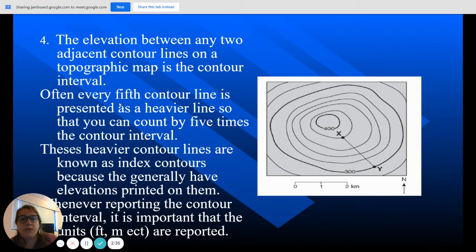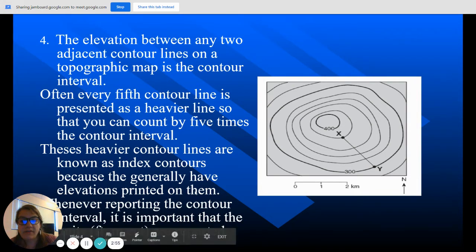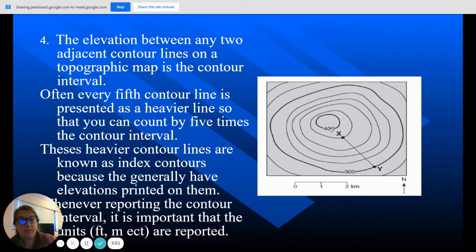So often every fifth contour line is presented as a heavier line. That's these heavier lines that you see here, so that you can count by five times the contour interval. These heavier contour lines are known as index contours. So these darker lines are index contour lines they're called. And they generally have elevations printed on them. These darker lines are usually the ones who are going to help you because they do have the elevation printed with them.